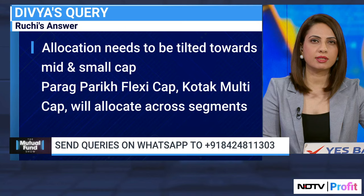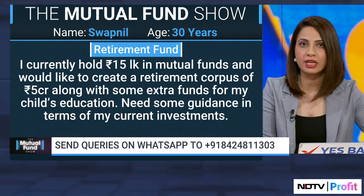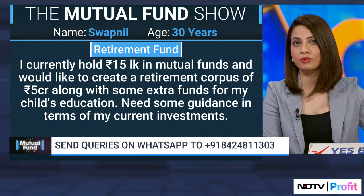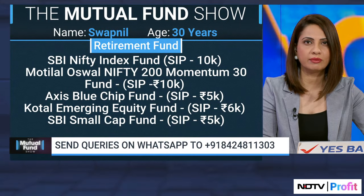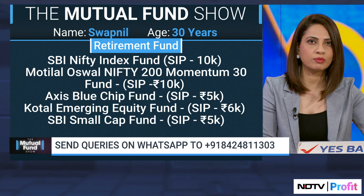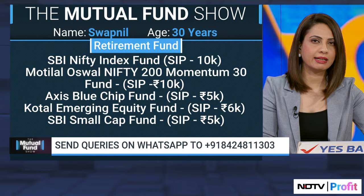Next question is from Swapnil, age 30, whose goal is a retirement fund. He currently holds 15 lakh rupees in mutual funds and would like to create a retirement corpus of 5 crore rupees, along with some extra funds for his child's education. His current investments include SBI Nifty Index Fund, Motilal Oswal Nifty 200 Momentum, Axis Blue Chip, Kotak Emerging Equity Fund, among others. His question is: what do you do next?